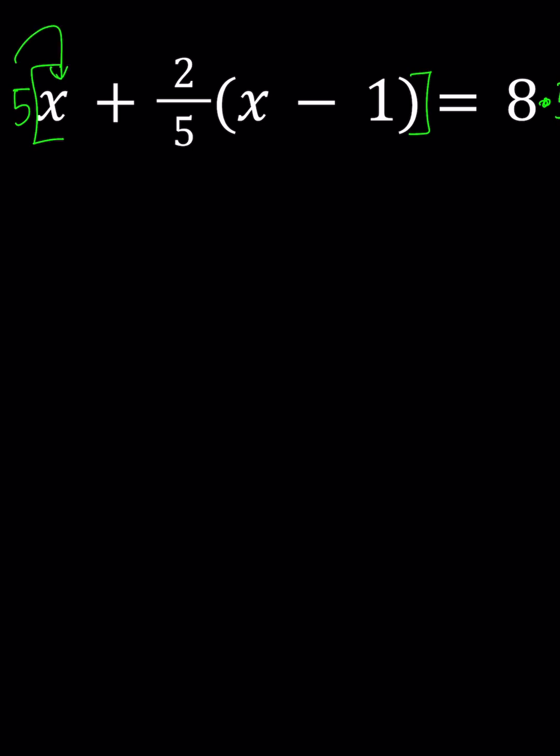5 times x becomes 5x, and when we distribute the 5 here, this is where the trick comes in. 5 and the 1/5 are going to cancel out, so we're going to be able to simplify that, and we're going to have 40 on the right hand side.